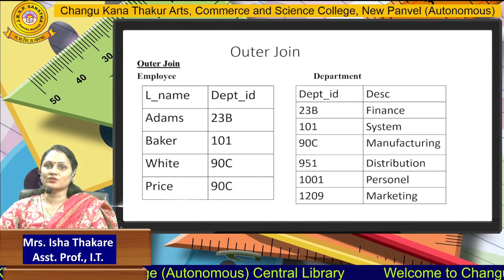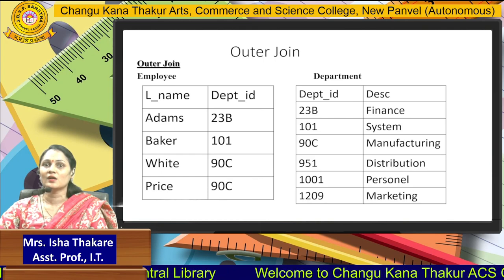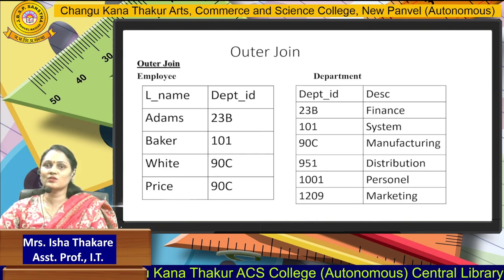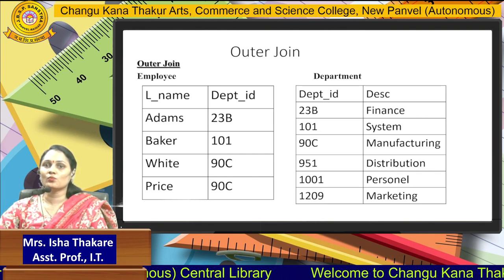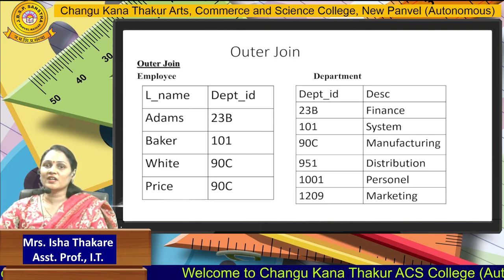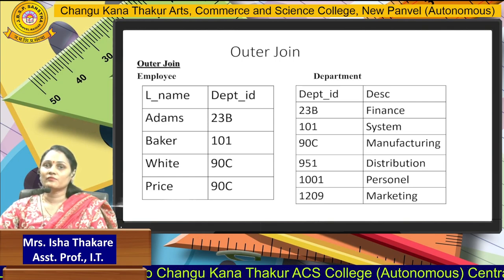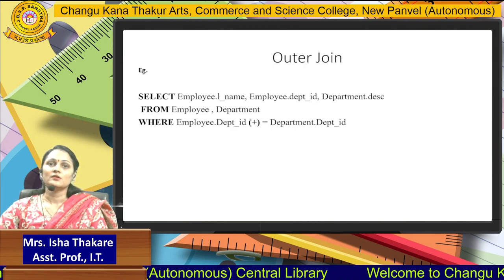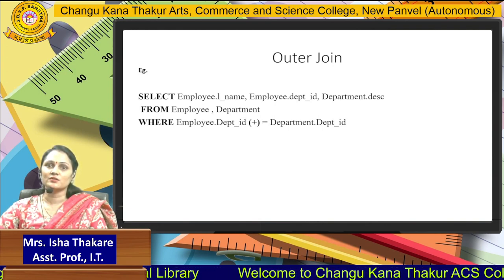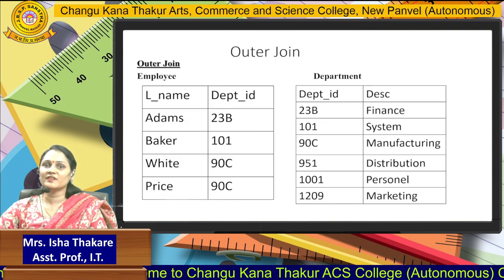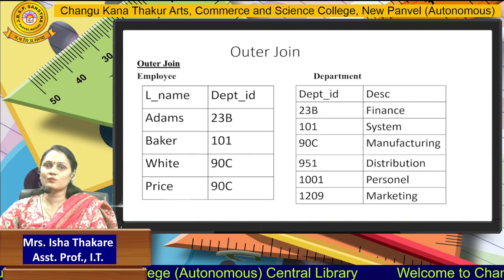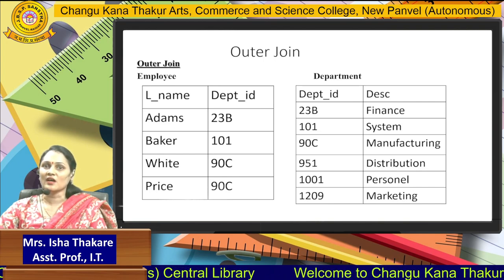In this outer join example, the employee table has 4 rows and the department table has 7 rows — uneven numbers. There is no direct match for values like 951, 1001, and 1209. We can join the two tables for direct matches and also include values without direct matches. The plus sign is placed on the employee table side because the employee table has fewer rows and no direct match for some entries.